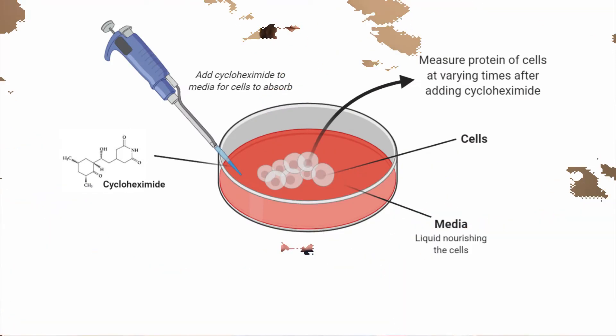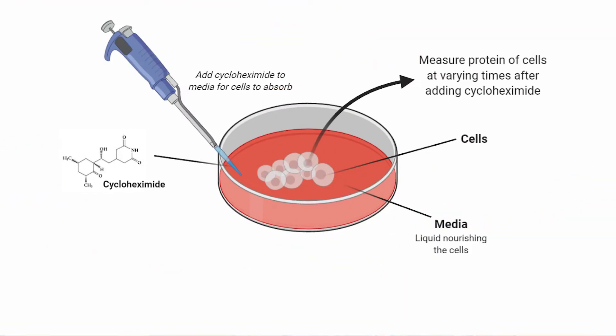Now we have one time point — the baseline — and we want to measure protein degradation, or breakdown. We simply add cycloheximide to the media surrounding the cells, and the cells take it up, and then we wait varying times and measure protein.